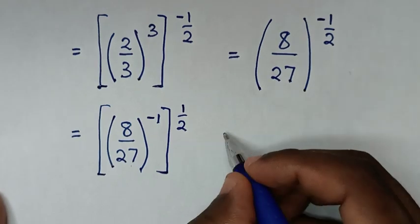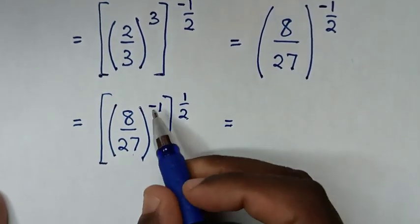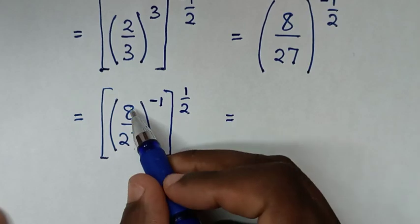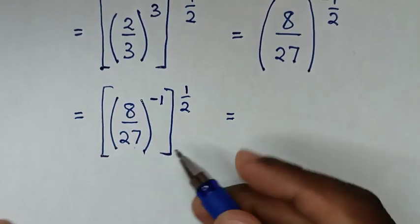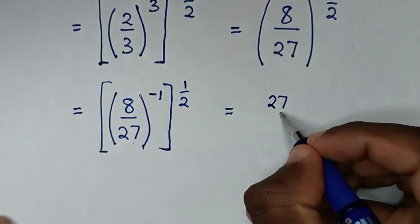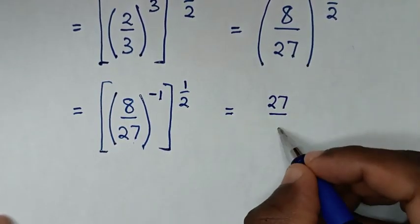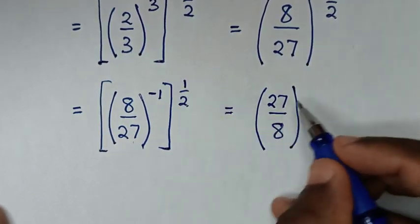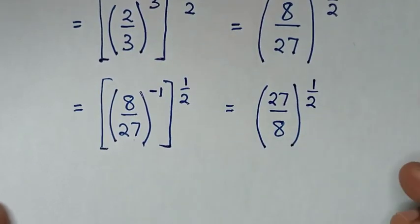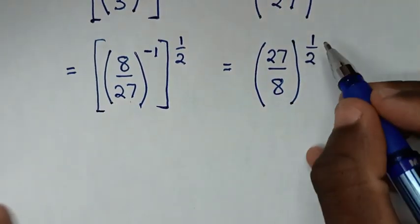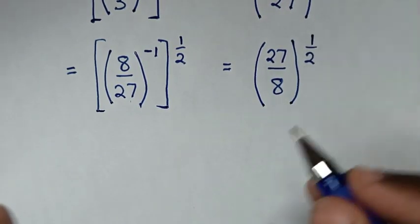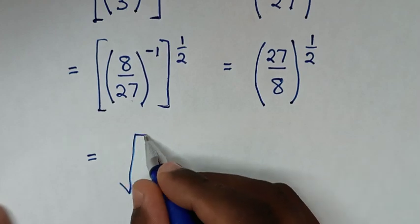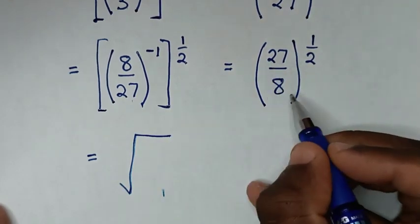So it will be equal to — from this power of negative 1, when we take inside the bracket it will be reciprocal of 8 over 27, which is 27 over 8, bracket power of half. This power of half is the same as square root, so it will be equal to square root of 27 over 8.